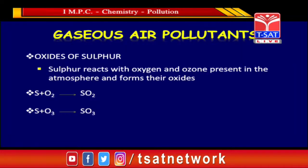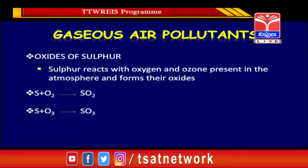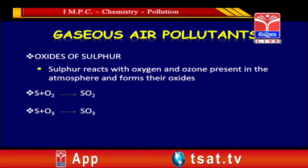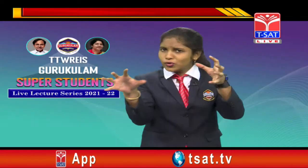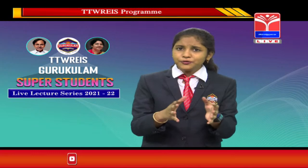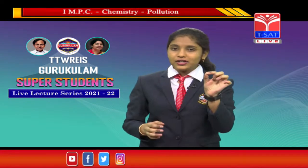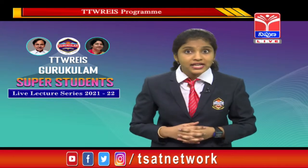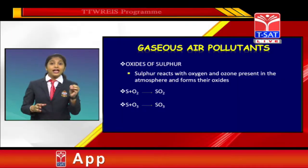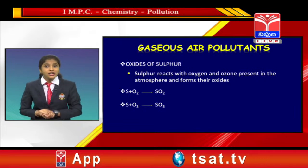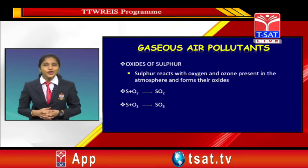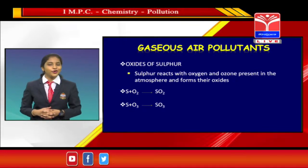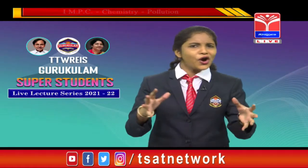Sulfur is produced by the burning of fossil fuels, paper industries, and volcanic eruptions. When sulfur reacts with oxygen and ozone present in the atmosphere, it forms respective oxides. Even small amounts of sulfur dioxide in the air cause many respiratory diseases in human beings like breathlessness, bronchitis, and emphysema. It also causes stiffness of flowers in plants.